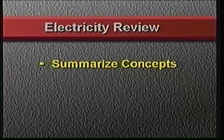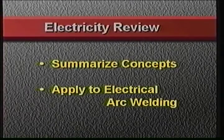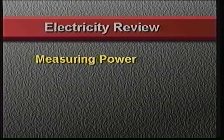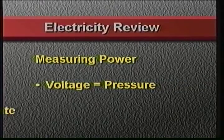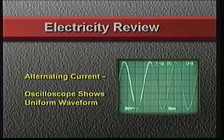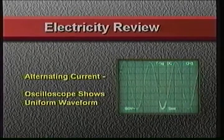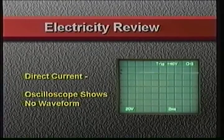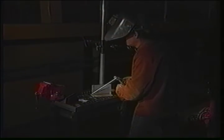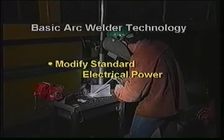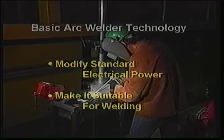Let's summarize what we've learned about electricity and then apply these concepts to electrical arc welding. Electrical power is measured using two main units: voltage, which is like water pressure, and amperage, which is like water flow rate. Alternating current has a waveform which can be displayed on an oscilloscope, while smooth direct current has no waveform. All arc welders are basically devices that modify standard electrical power into a form suitable for welding.